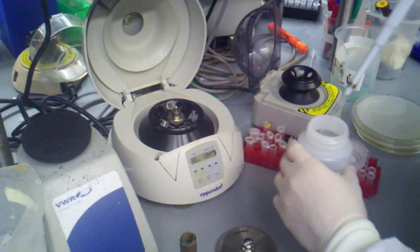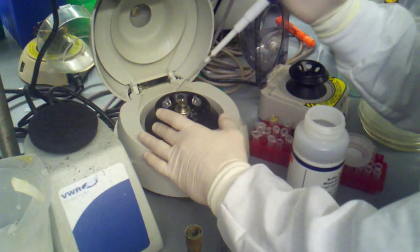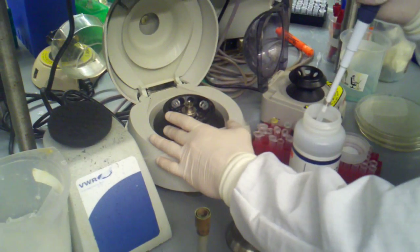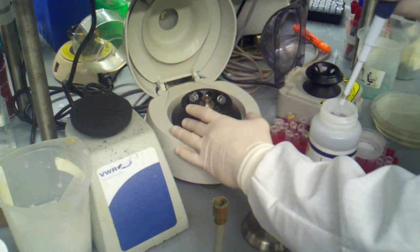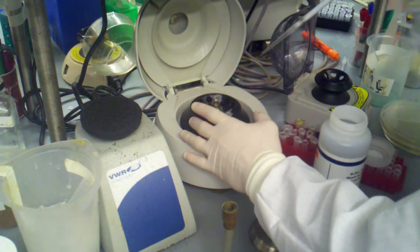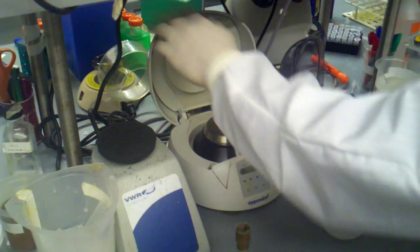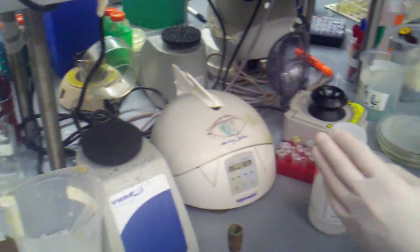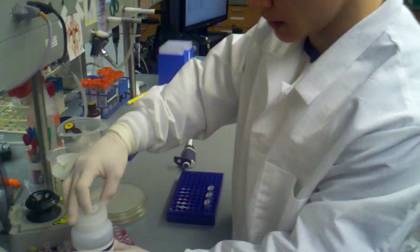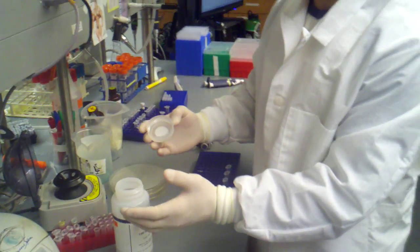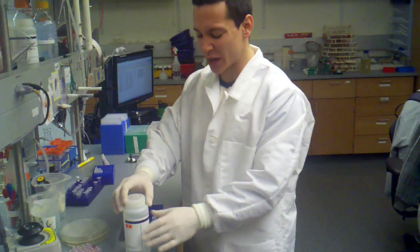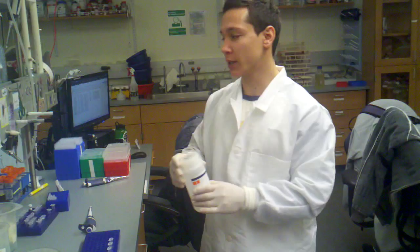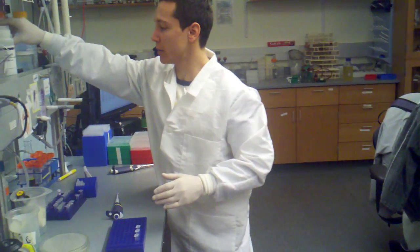We're going to do our second rinse. Again, we don't need to check the flow-through columns because the total volume that we're adding here should be less than the total capacity of that flow-through. So that's three. I'm going to cap that up, spin it, ditch the tip, recap my PE. You don't want to leave this open for too long because this wash buffer is mostly ethanol, and it will evaporate. If it evaporates, you shouldn't be too worried about it, but it can throw off some of the buffering conditions.